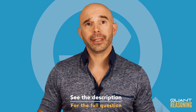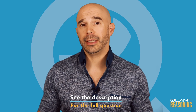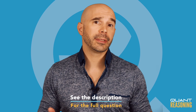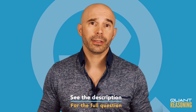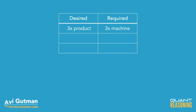The trick to a question like this is to look at the ratios. If you want to produce three times as much, all else being equal, you'd need three times as many machines. Similarly, if you wanted to produce the same amount in two-thirds of the time, you'd need three halves as many machines.